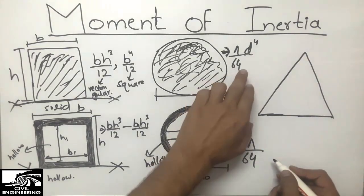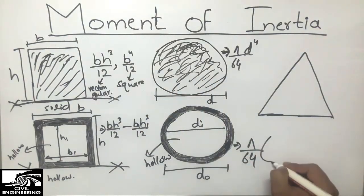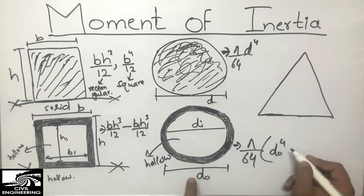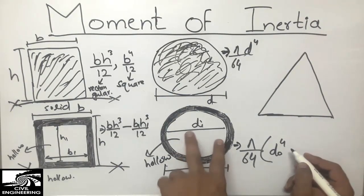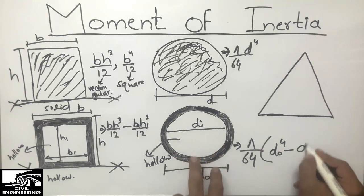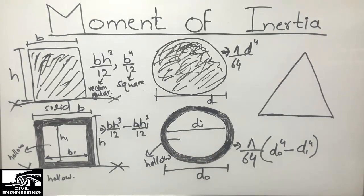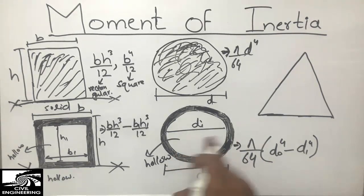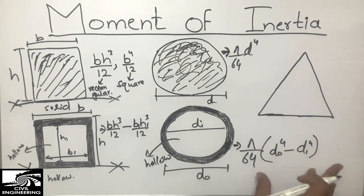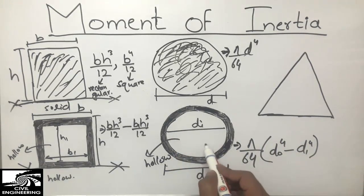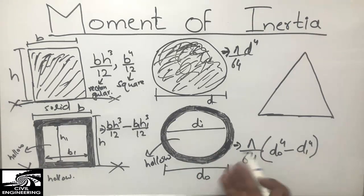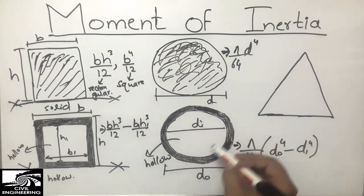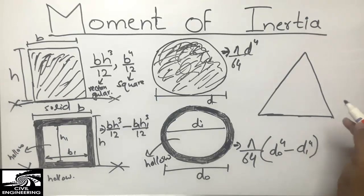Like the solid circular case, we take π/64 times the outer diameter D to the power 4, then subtract the inner diameter d_i to the power 4. So I = π/64 × (D⁴ − d_i⁴). This is the moment of inertia of the hollow circular object, obtained by subtracting the inner diameter contribution from the outer.